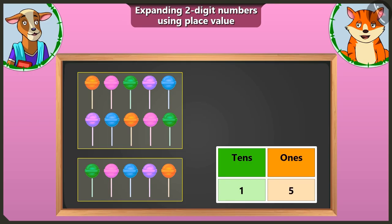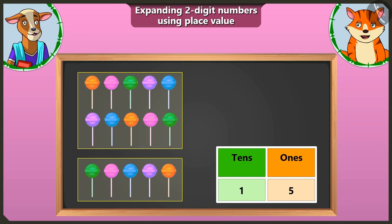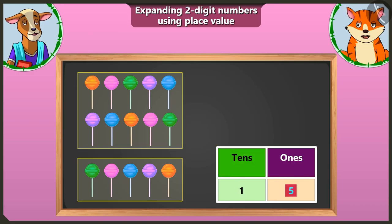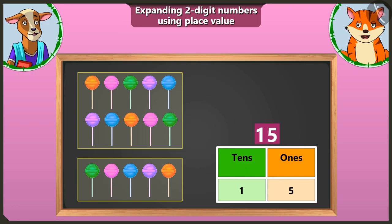Now, tell me — one tens and five ones, what is the number that we have? One tens and five ones make the number fifteen. Well done, Billy.